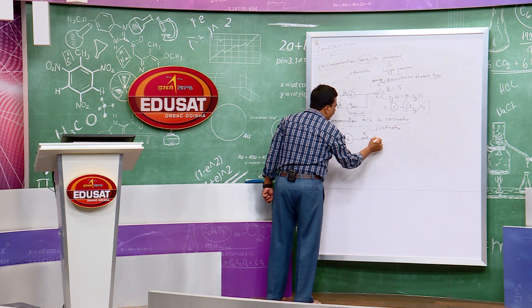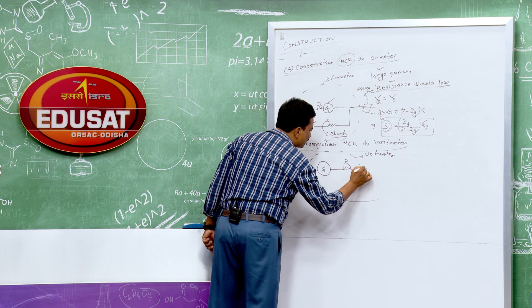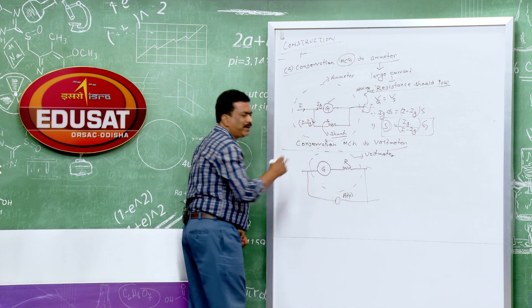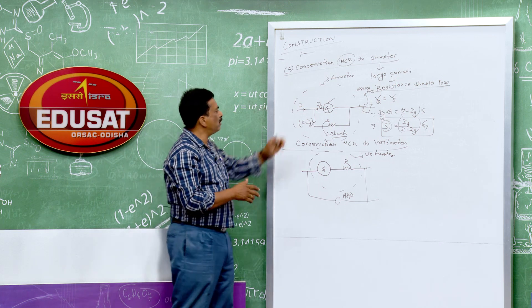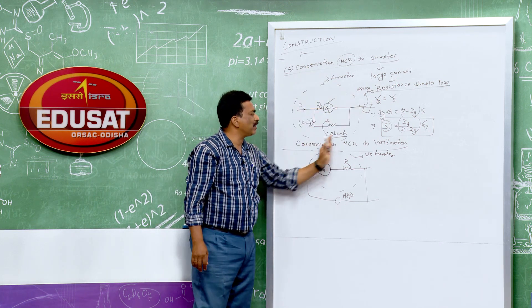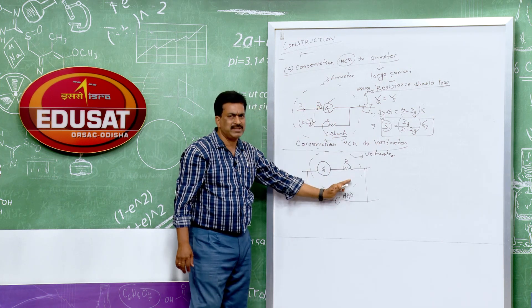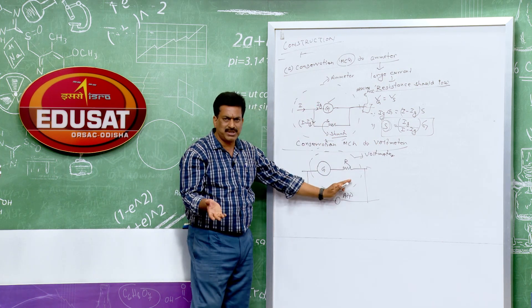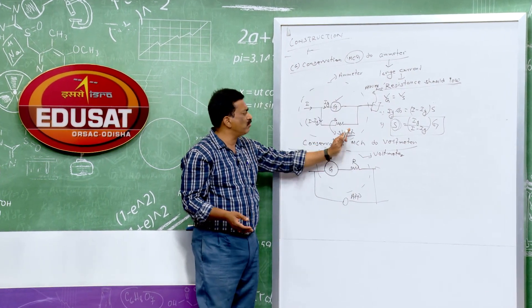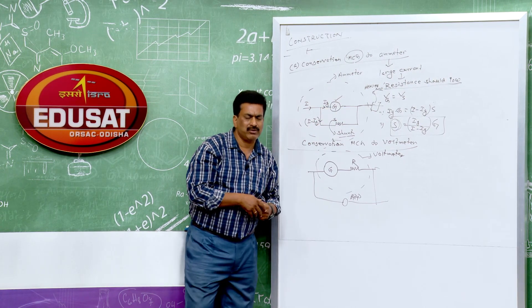To summarize: for converting galvanometer to ammeter — low shunt resistance connected in parallel, and this combination is connected in series with the circuit. For converting galvanometer to voltmeter — high resistance connected in series, and this combination is connected in parallel with the appliance. The galvanometer is now converted to an ammeter or voltmeter. Thank you very much.